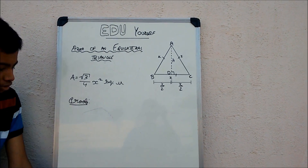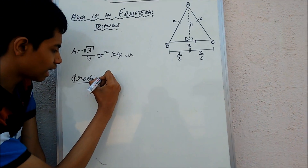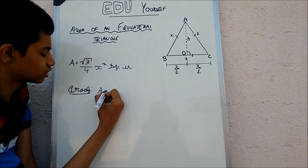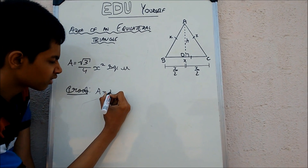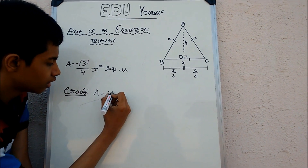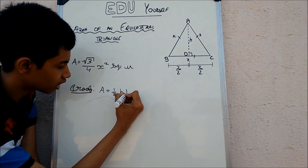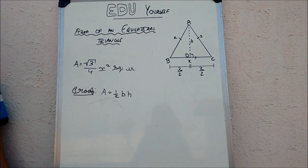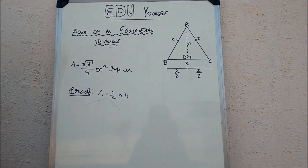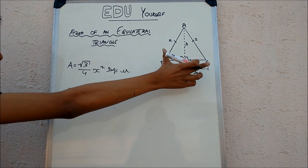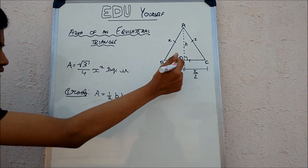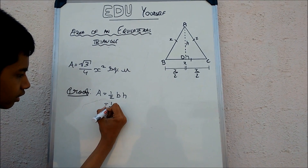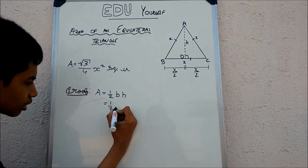Now we know that the area of any triangle is nothing but half times the base of the triangle times the corresponding height. Now let us consider that our base is BC. The magnitude of our base is nothing but x.